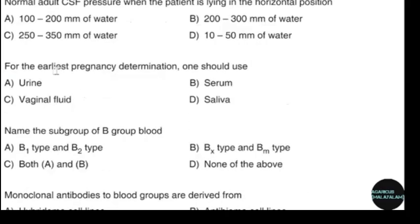Normal adult CSF pressure when the patient is lying in the horizontal position. Correct answer: option A — 100 to 200 mm of water.